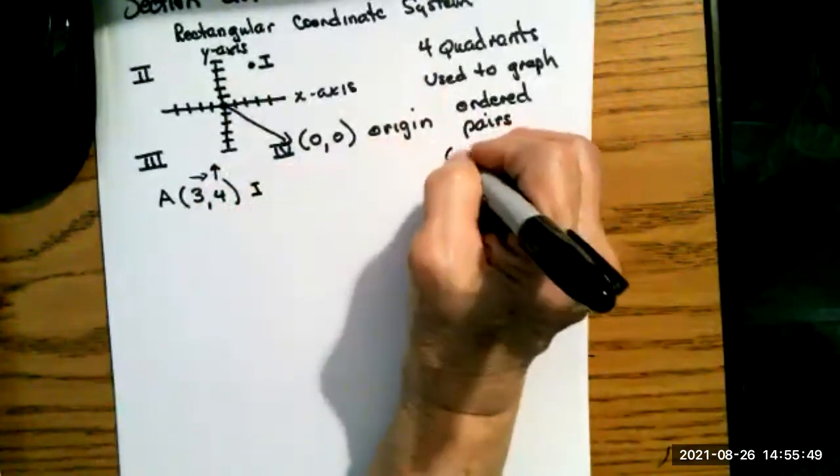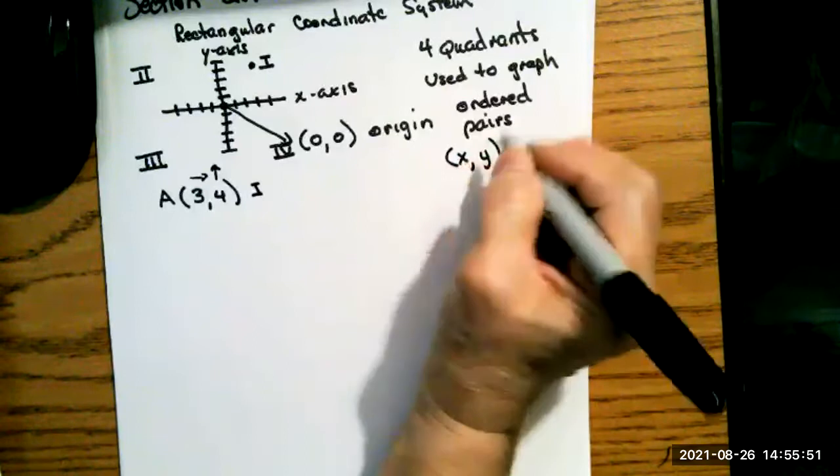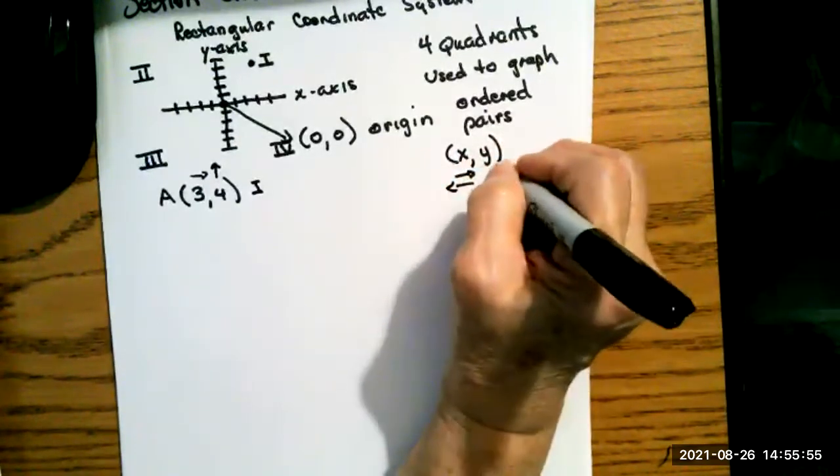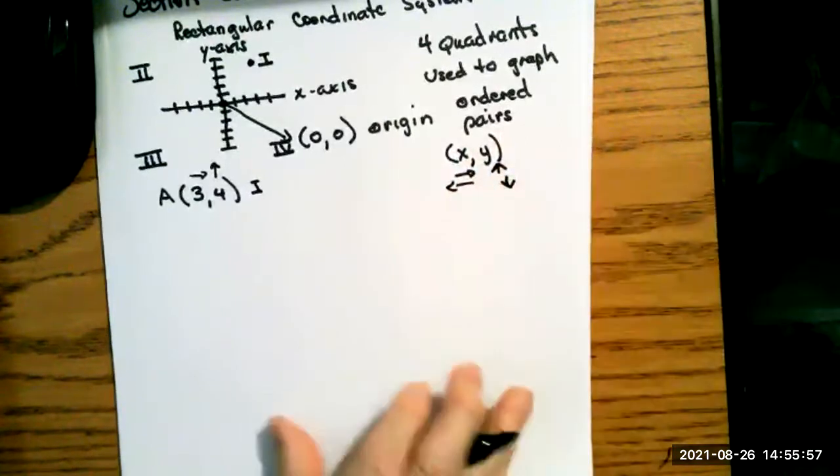Notice the ordered pairs are in the form x, y, where x will go either to the left or right, and y goes up or down from that x value.